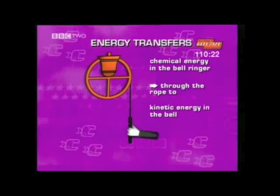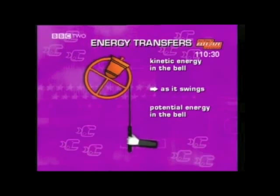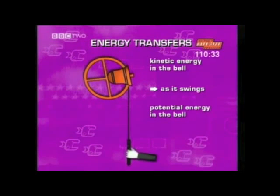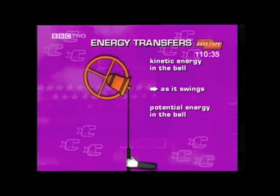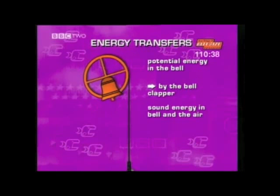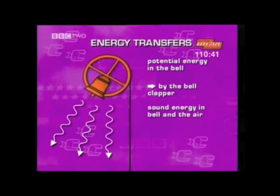The bell will start moving, then fall the rest of the way round and make a sound — but that's just describing what happens and won't get any marks. The question wants to know about the energy transfers taking place. First, chemical energy stored in the bell ringer's muscles is transferred through the rope to become kinetic energy in the bell. As the bell begins to swing, kinetic energy changes to potential energy. Finally, the potential energy in the swinging bell is transferred into sound energy in the metal and the air.